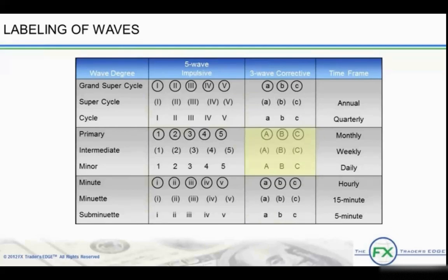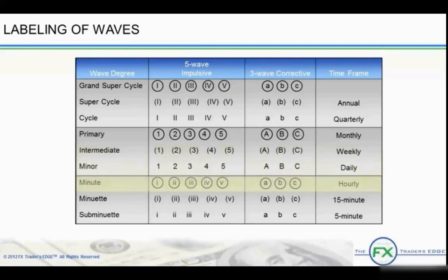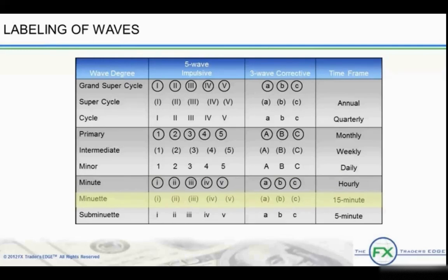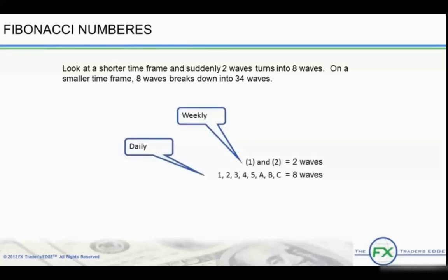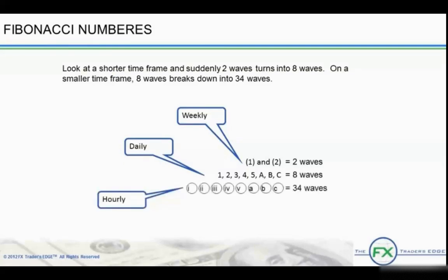The final column in the chart is labeled time frame. We've labeled which wave degree applies to which time frame in the currencies. The weekly charts are the intermediate wave degree, the daily charts are the minor wave degree, the hourlies are the minute wave degree, and the 15-minute is labeled as the minuet degree. It is merely a guide, and there are other conventions. Most important to know is whether we are in a 5 or a 3 wave sequence, rather than to know exactly how to label the move.